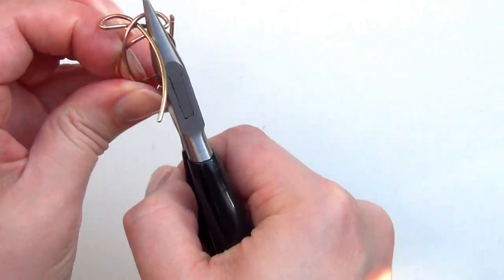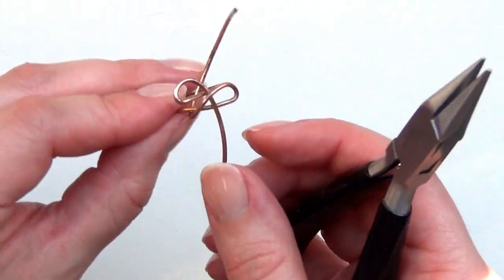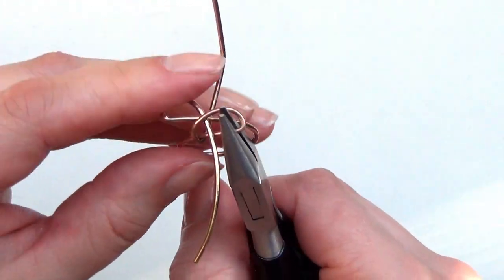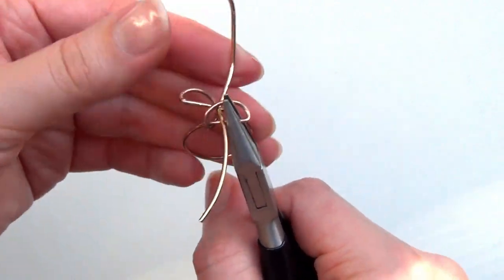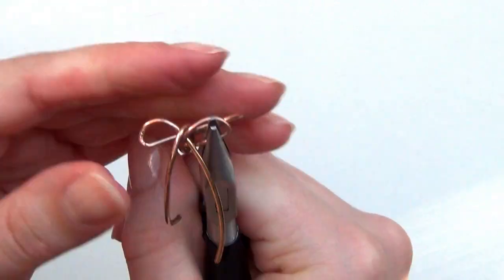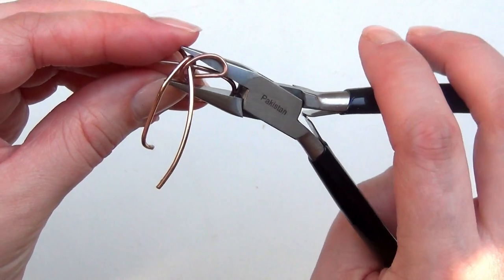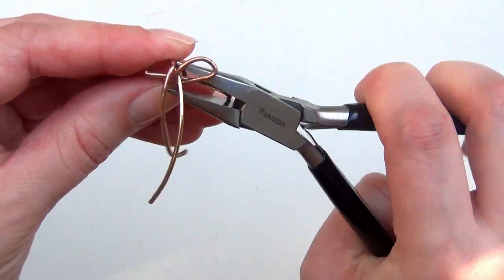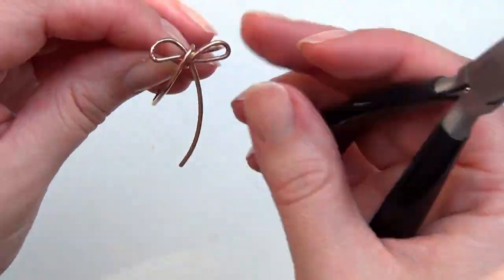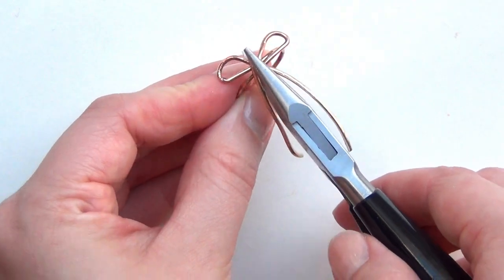Once you've pulled it all the way through the ring, turn it up and over the top, and then pinch the knot with your pliers to tighten it up.